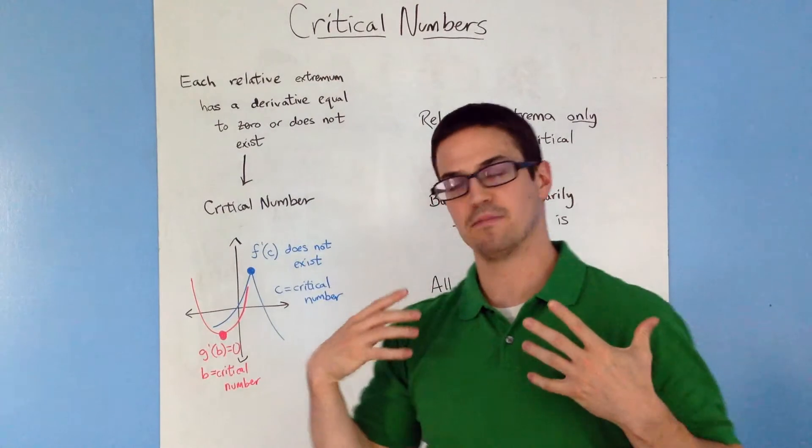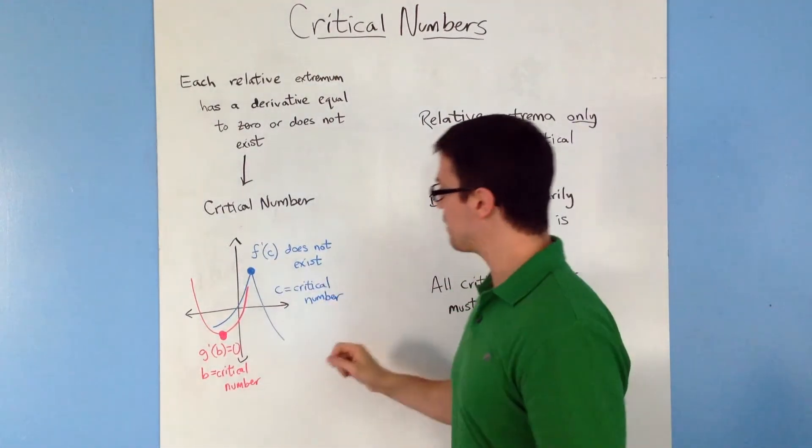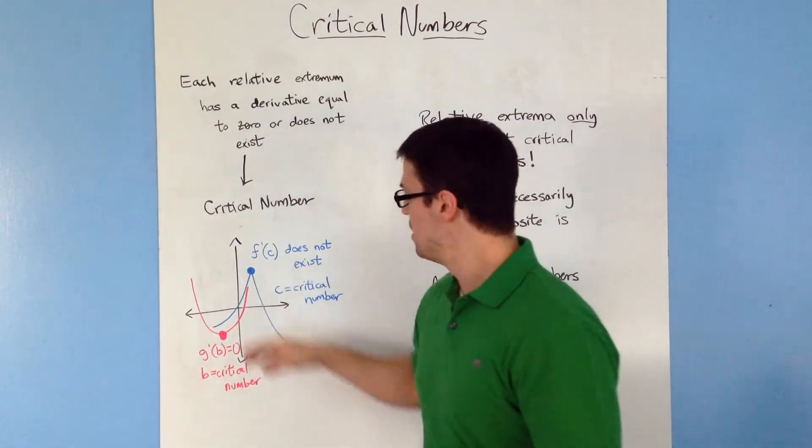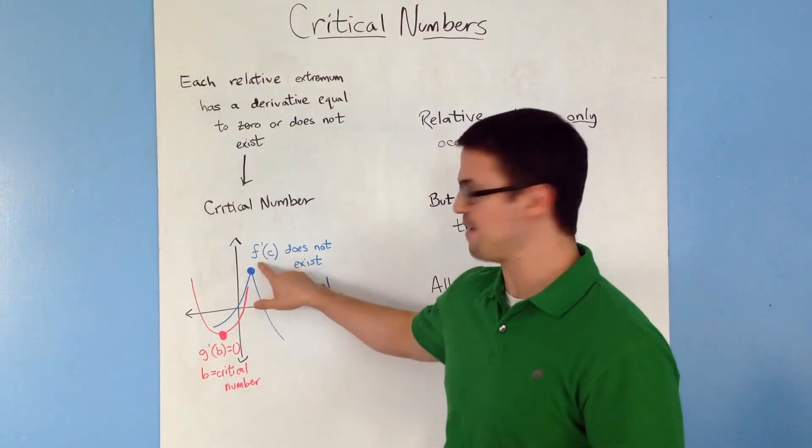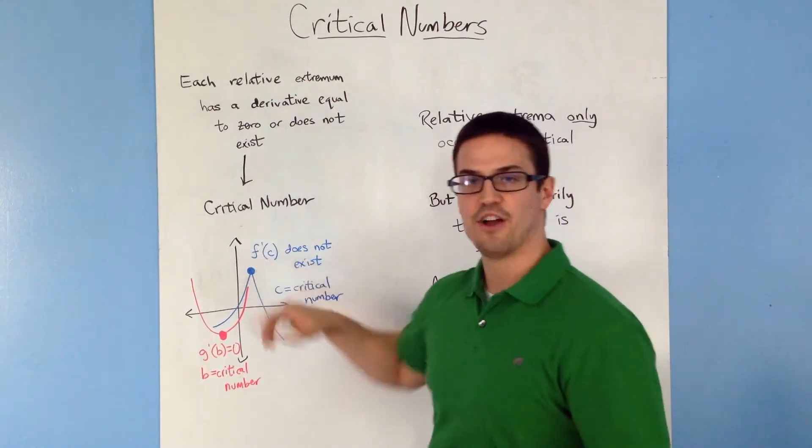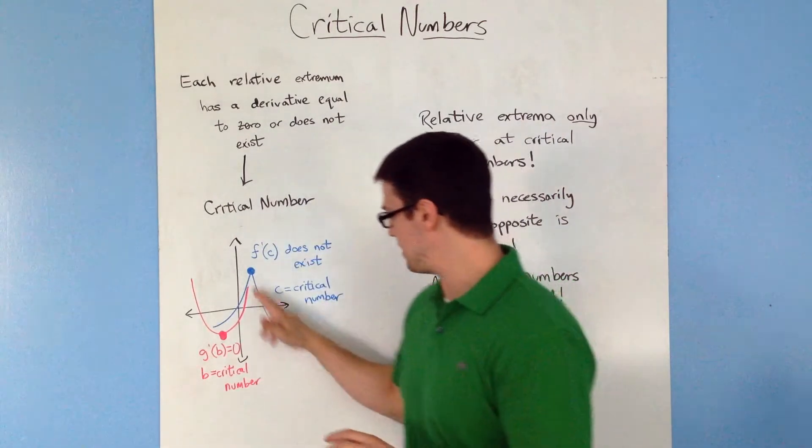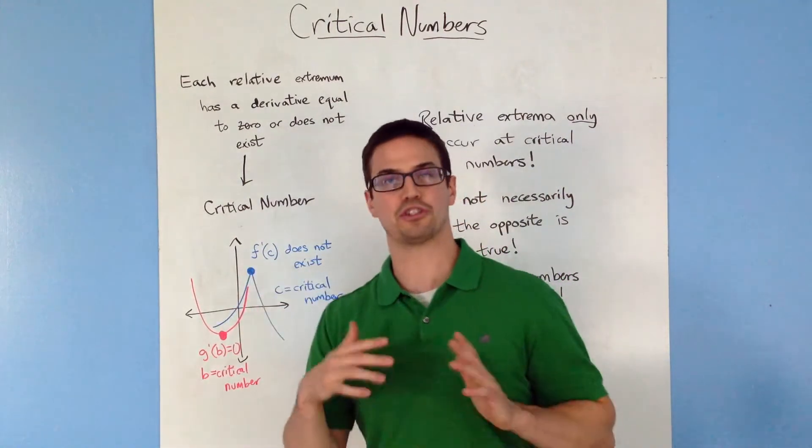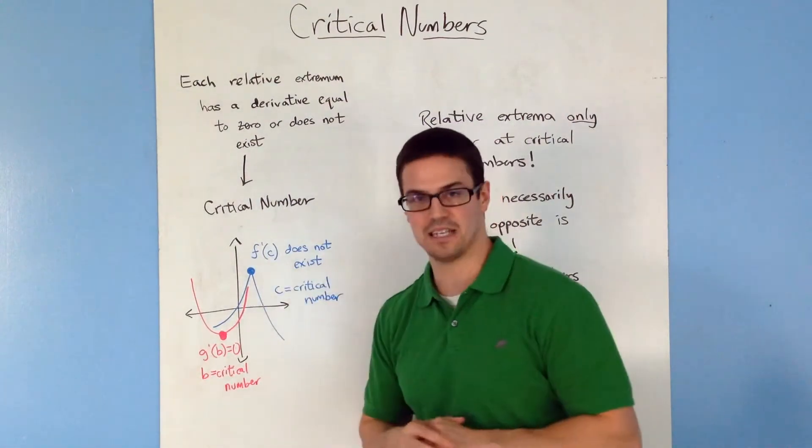Now to explain this a little bit better, I drew a graph right here that shows critical numbers. So I have this blue function, f, and at f prime of c, this point right here, the derivative does not exist because it is a sharp hill there. So every time it's a sharp hill, the derivative does not exist.